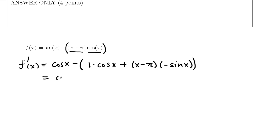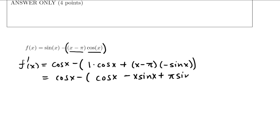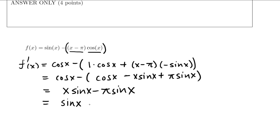Let's clean this up. We get cos x minus cos x plus x sine x. Those cos x minus cos x terms cancel. Minus minus makes positive x sine x minus π sine x. I'm thinking maybe I shouldn't have multiplied those out — that wasn't to my advantage. So I'm just going to go back and factor it back out, giving us (x minus π) times sine x.